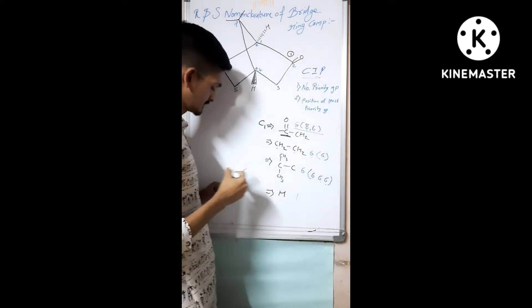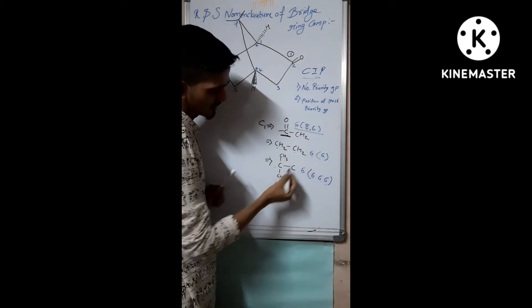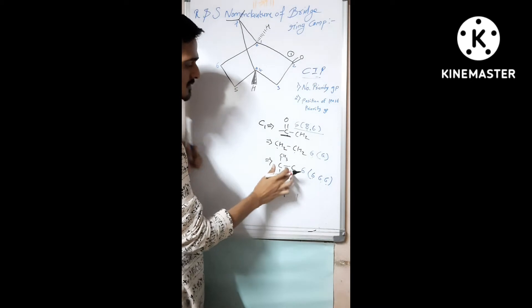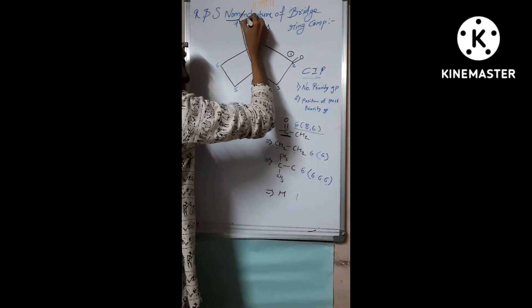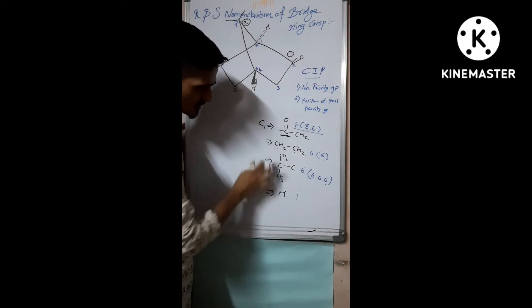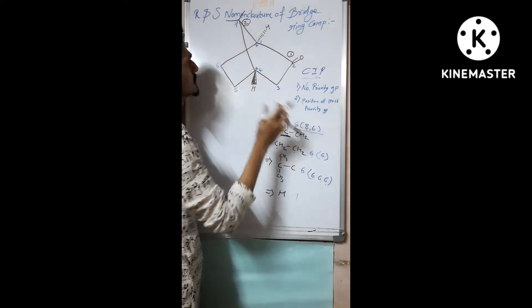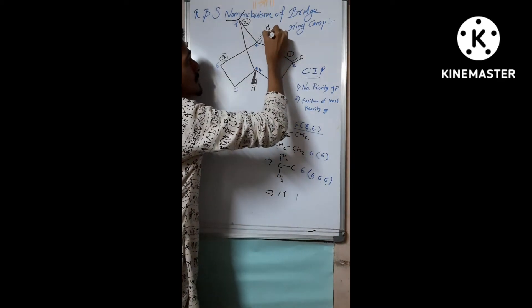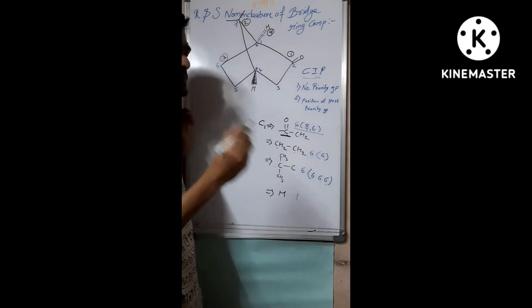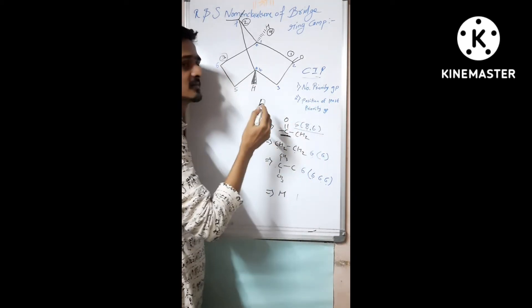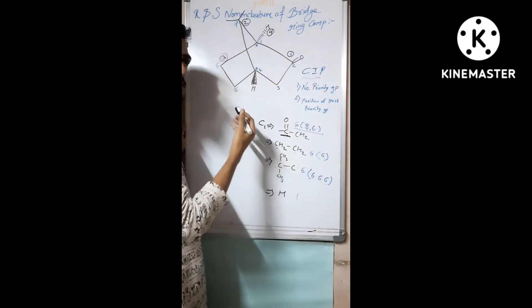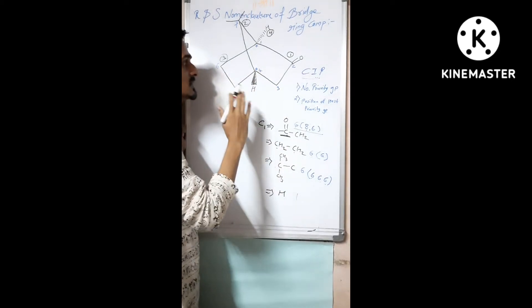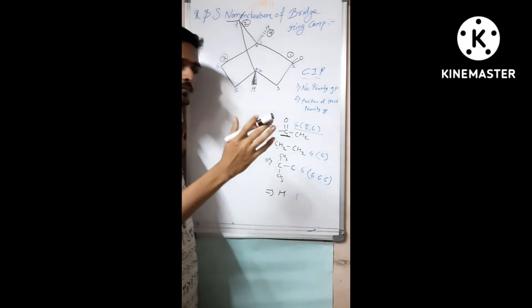For the second priority, comparing the remaining groups — one has three carbons attached and the other has only one carbon — the second priority goes to the group with three carbons. Third priority goes to the methylene group. The least priority — fourth — is hydrogen. After assigning priority groups, you have to check the position of the least priority group: if it is below the plane, going away from the observer, there is no change needed; if it is coming towards the observer, you must invert your answer.